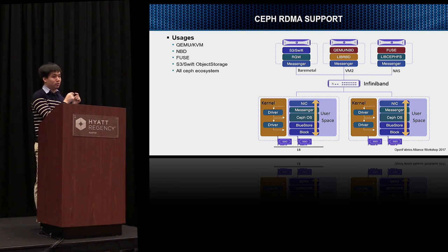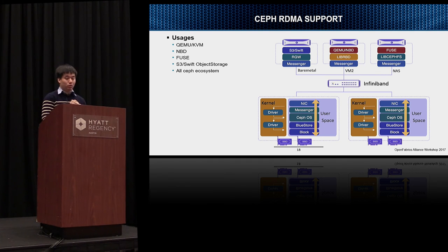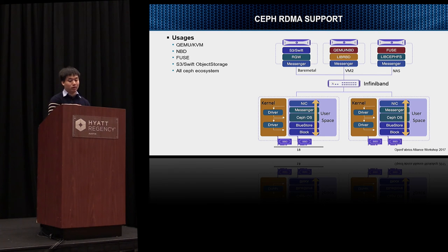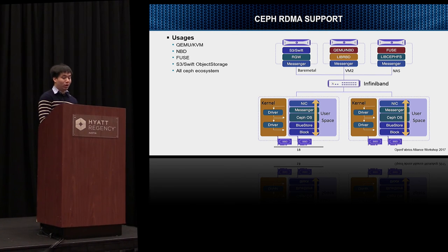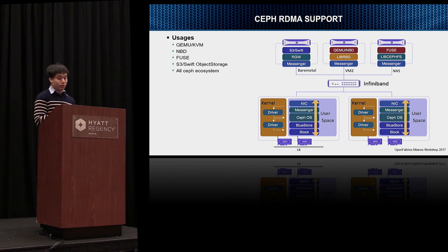The Ceph RDMA usage across the user base: for object storage, users can use S3 to access the cluster, and the RADOS Gateway, a standalone process in Ceph, transmits messaging via RDMA into the Ceph cluster — so the S3 front end is TCP but the entire back end is RDMA. For virtualization, QEMU or NBD (network block device) in the Linux kernel can use user space to access the Ceph RDMA cluster. For file system usage, CephFS clients can run over the RDMA network.